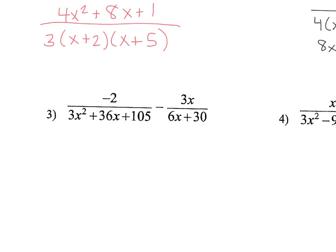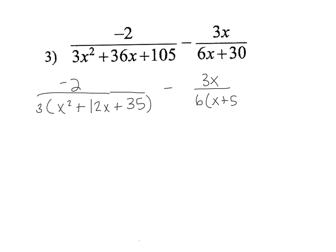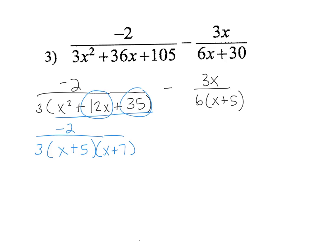So you need to factor in order to find the denominator. For this one, I can factor out a 3, so it's 3 times x squared plus 12x plus 35, minus 3x times 6 times x plus 5. This can factor further — factors of 35 that add up to 12 are 5 and 7 — minus 3x times 6 times x plus 5.